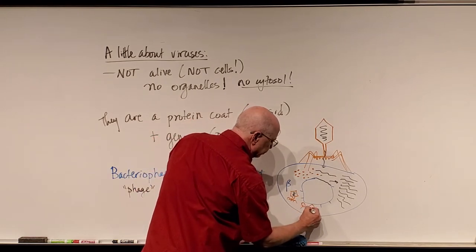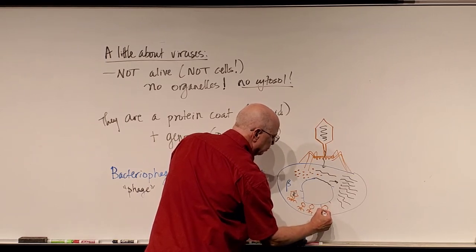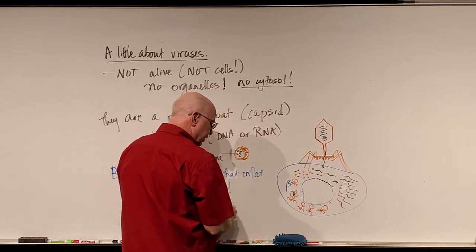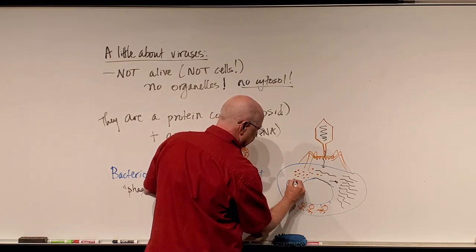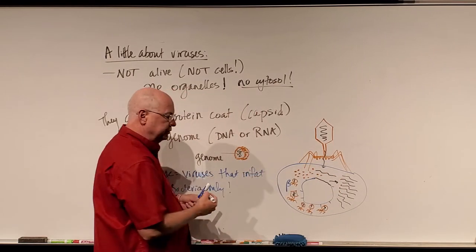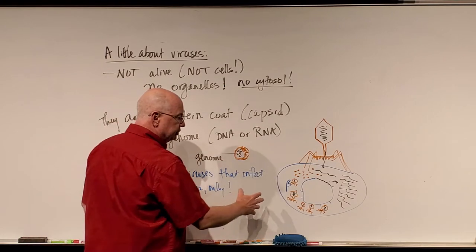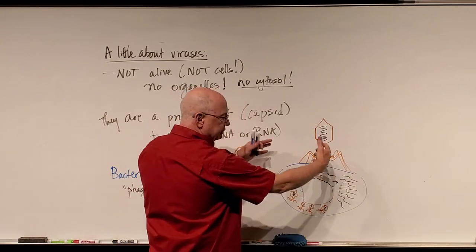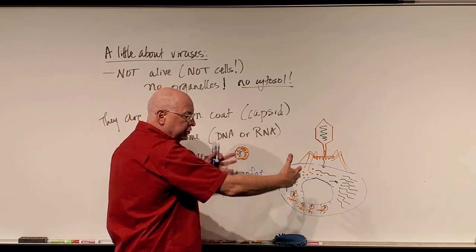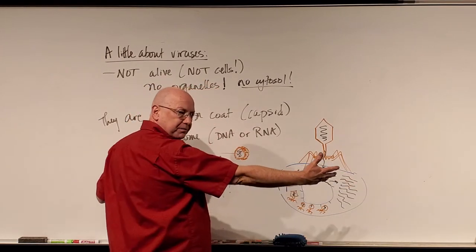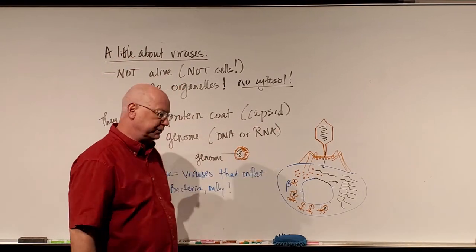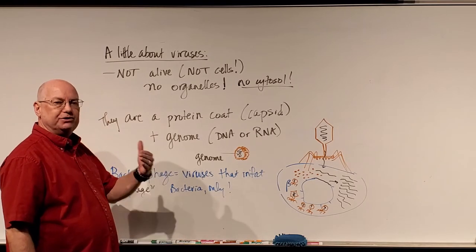When we put the protein coat or capsid together with the viral genome, we can make thousands of copies. In many instances, they will then lyse the bacterial cell, break it open, and release these phage to infect even more bacteria. The process replicates — they grow in number and infect more and more cells. A similar thing happens in eukaryotic cells when a virus invades.